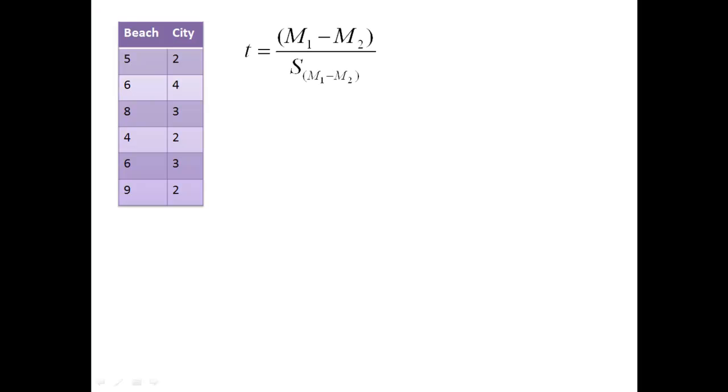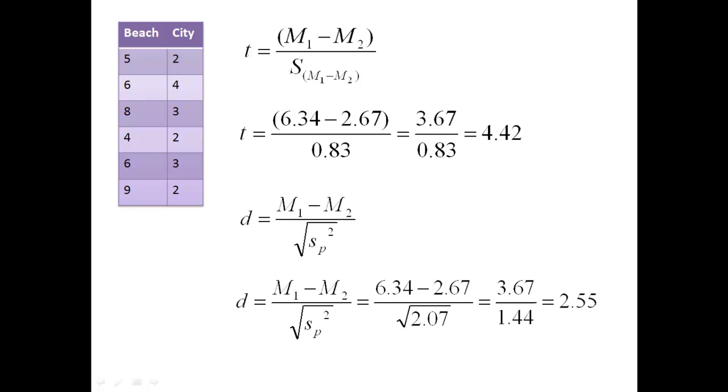Here's the formula for T. We have already calculated the means. We've already calculated the standard error of the mean. So T is just going to be a really straightforward formula, and we found that our T equals 4.42. The last thing we're going to do is calculate the effect size, Cohen's D, and Cohen's D is equal to 2.55.